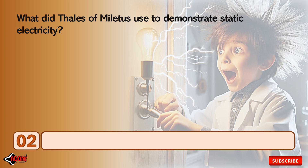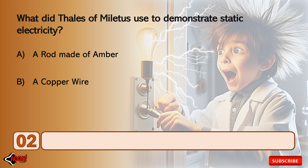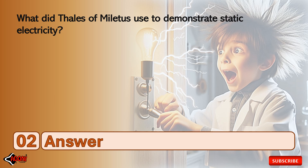What did Thales of Miletus use to demonstrate static electricity? A rod made of amber, a copper wire, or a magnet? The answer is a rod made of amber.